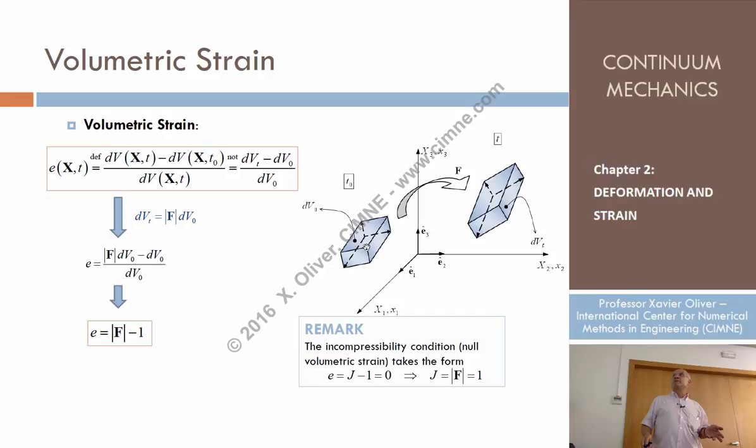At the reference configuration, the gradient of deformation tensor is the unity. So the determinant is 1. 1 minus 1 is 0. That's correct.